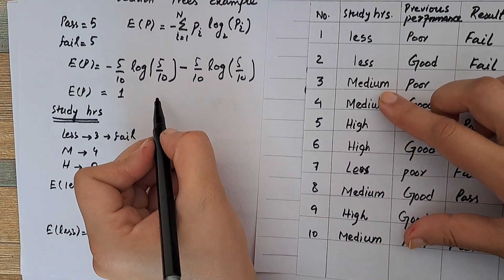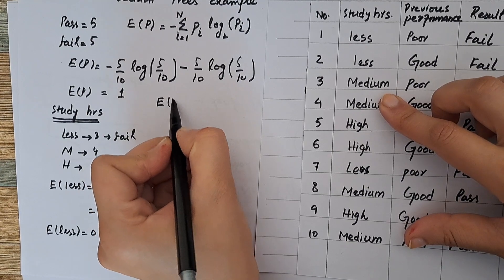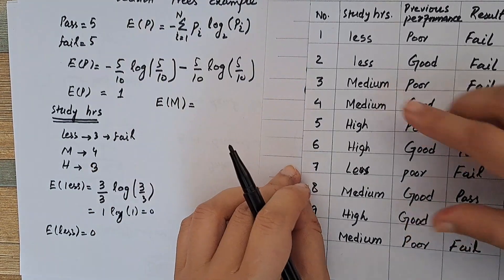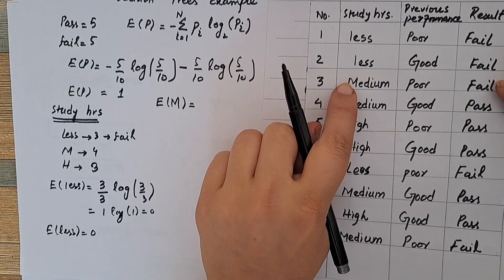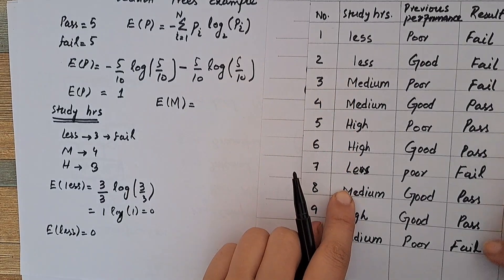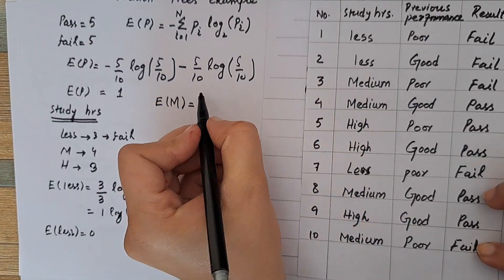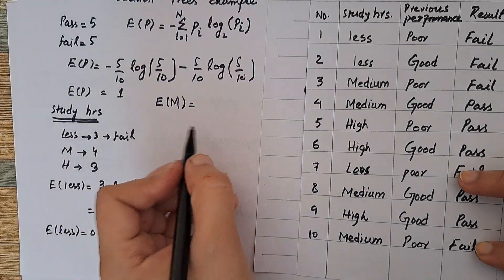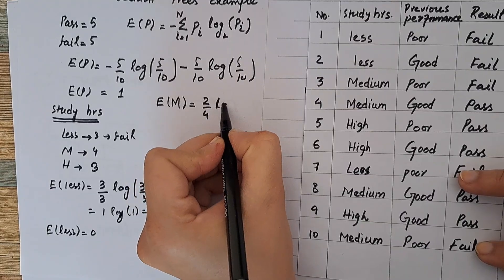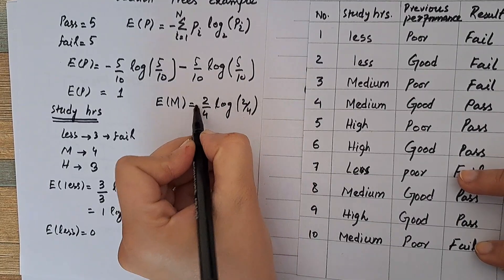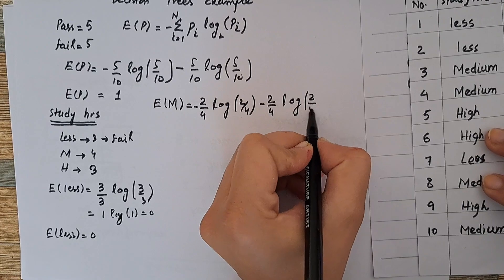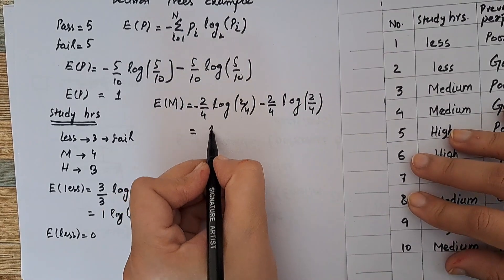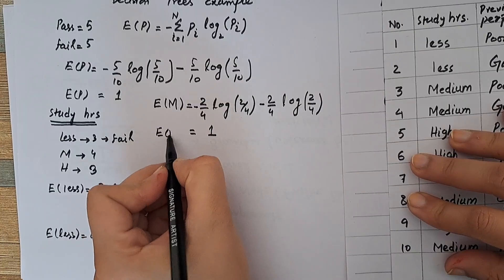Next, let's evaluate the entropy of medium. For medium study hours, two students pass and two fail out of four. So entropy of medium equals negative of: (2/4)log(2/4) minus (2/4)log(2/4). When simplified, entropy of medium equals 1.